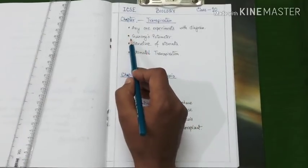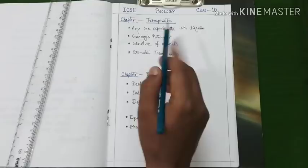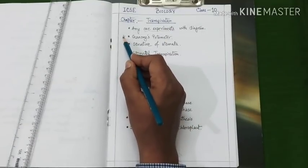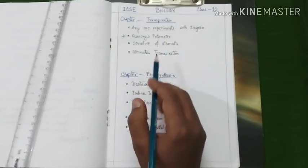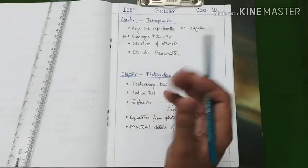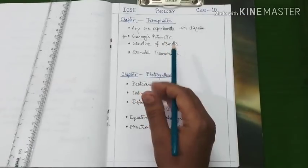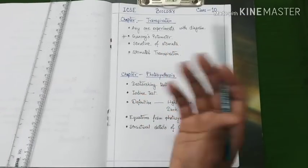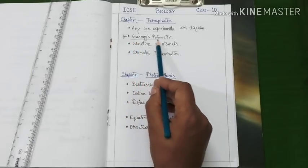Our next topic is Ganong's photometer. This section is very important under this chapter. I am putting a special emphasis on this. You may certainly expect questions like structural details of photometer, diagram of Ganong's photometer along with its limitations. So this section is very important.